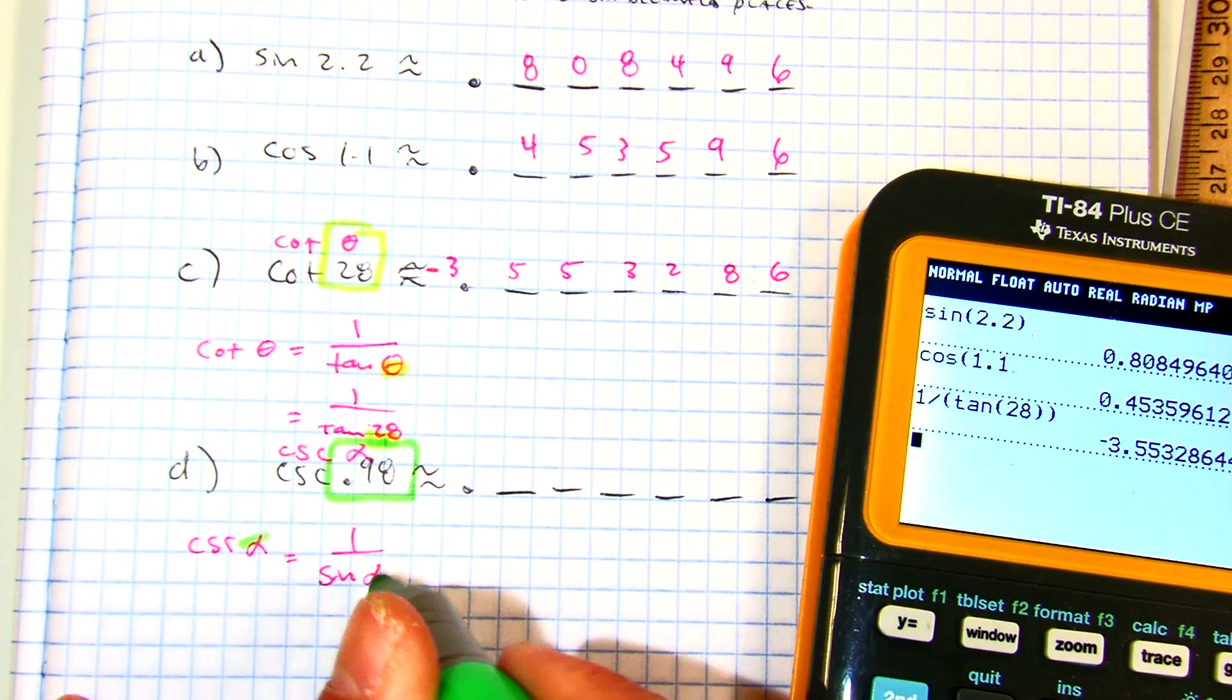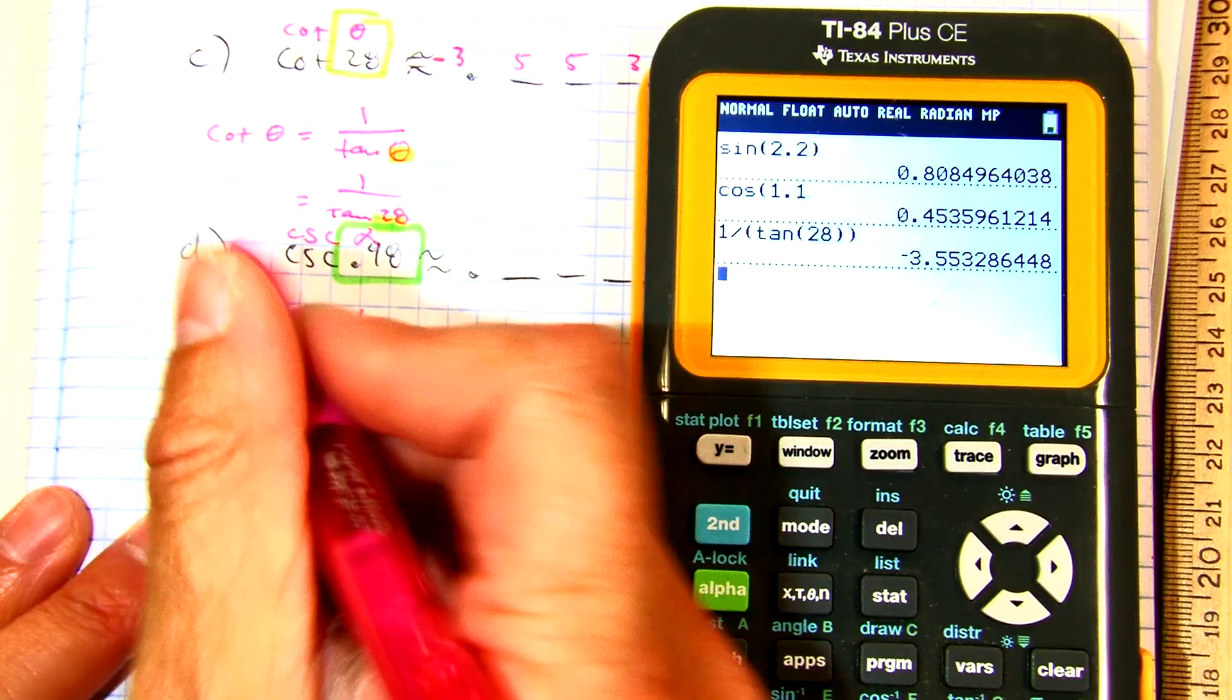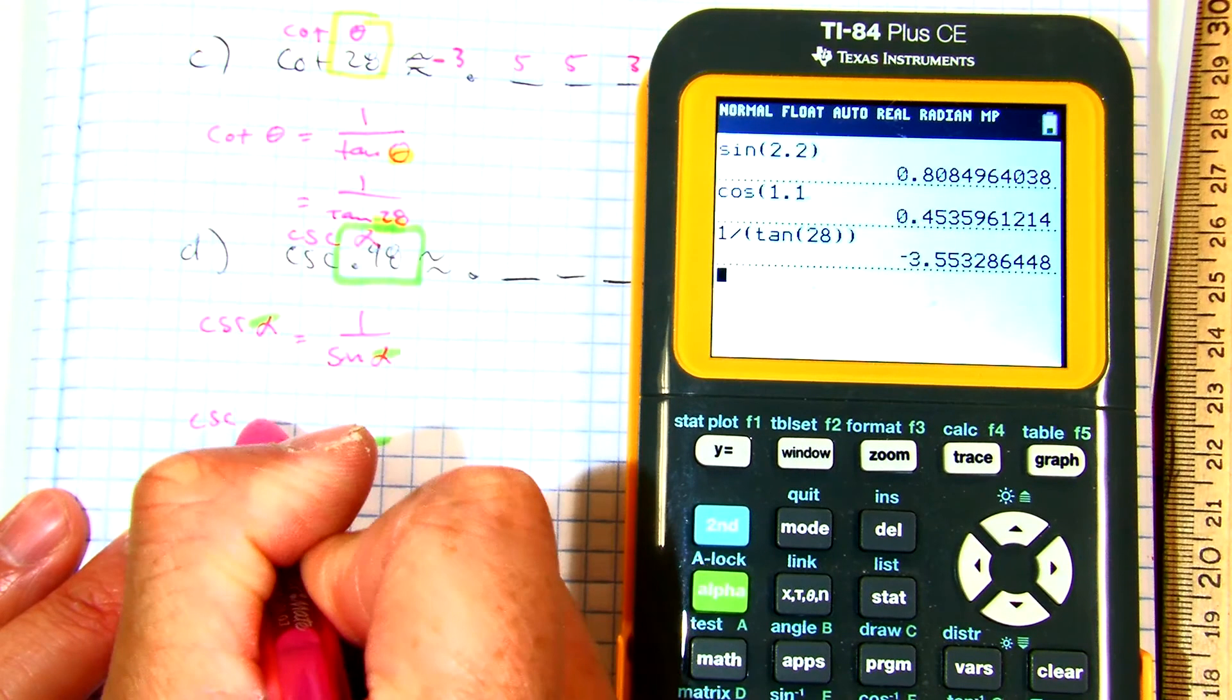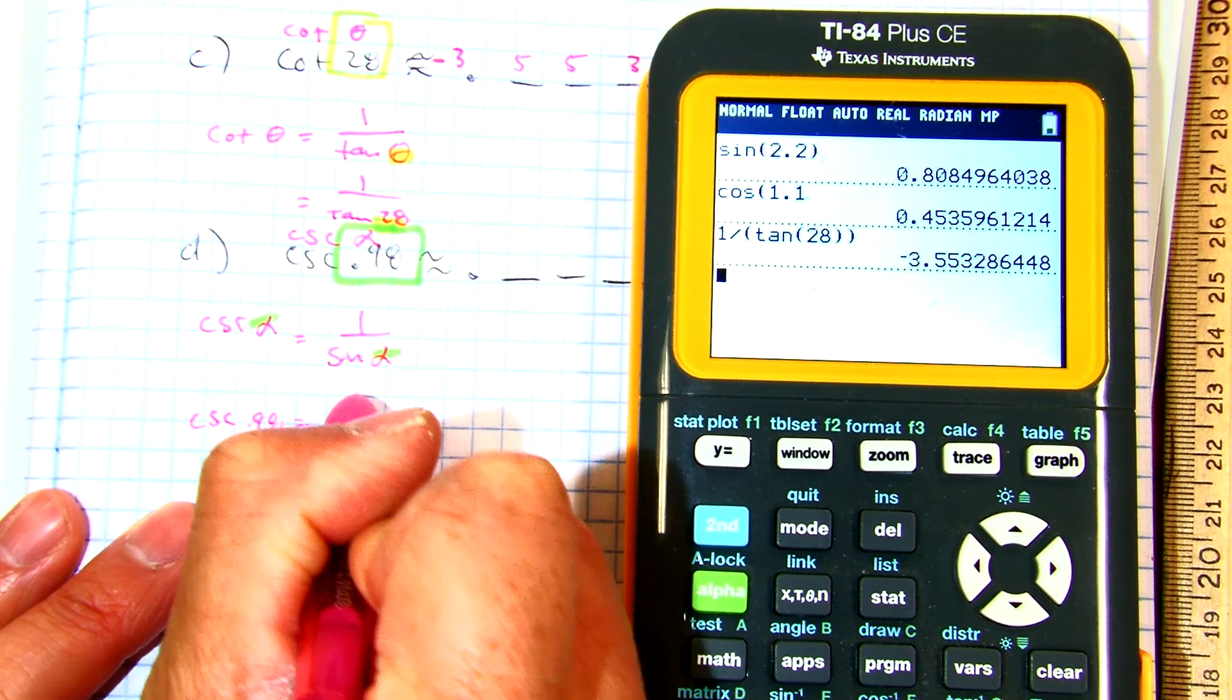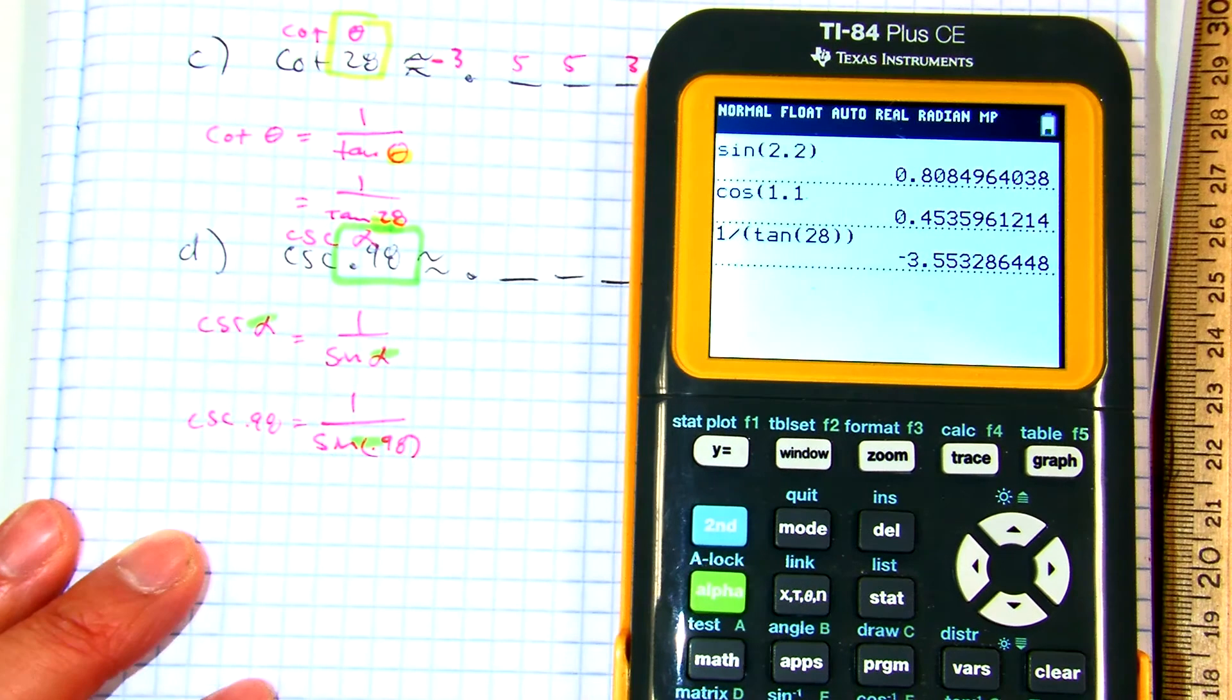And we know that alpha equals 0.98. We can just put in 0.98 there. So really, cosecant of 0.98 equals 1 over sine of 0.98. And that's in radians. Put it in your calculator.